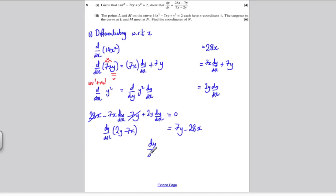So dy/dx is (7y - 28x) all divided by (2y - 7x). You can change the order of top and bottom to match the question, so that's (28x - 7y) over (7x - 2y). We've done what's asked in the question.